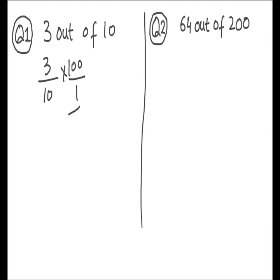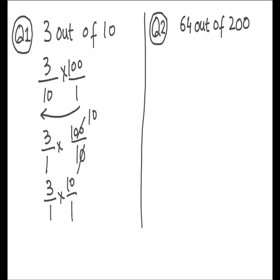So what we can do is change the position of the denominator. We have 3 over 1 and 100 over 10. We can simplify 100 over 10: 10 goes 10 times into 100, so what's left is 3 over 1 times 10 over 1. Numerator multiplied by numerator and denominator multiplied by denominator: 3 times 10 is 30, and 1 times 1 is 1. The simplified answer is 30%. So 3 out of 10 is actually 30%.